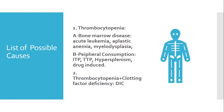Bone marrow causes of reduced platelet production include infiltration by malignant cells — usually leukemia or possibly lymphoma. Patients with aplastic anemia also have failure of bone marrow function. Myelodysplasia can present with thrombocytopenia and bleeding tendency. Less likely is megaloblastic anemia — especially vitamin B12 deficiency — which can present with thrombocytopenia, leukopenia, and anemia, though bleeding tendency is a less common presenting feature.